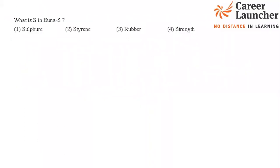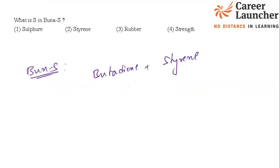Next is a very easy question from polymers. Buna-S is a copolymer formed from butadiene and styrene — 'S' represents styrene. The answer is option 2. Very easy question from the polymers chapter.